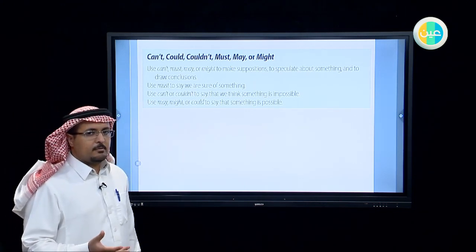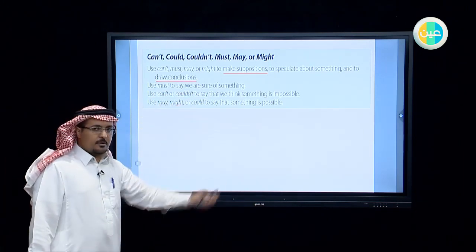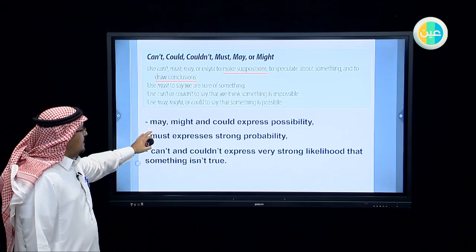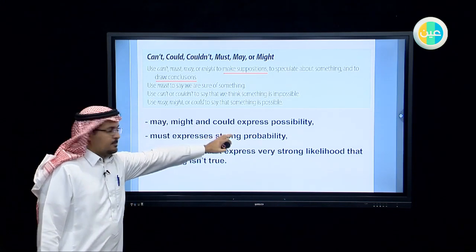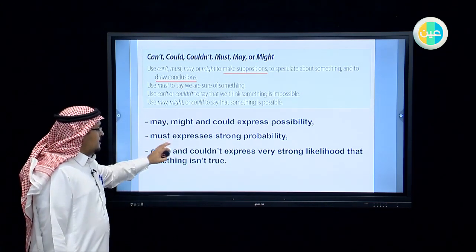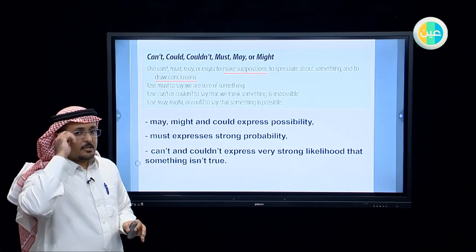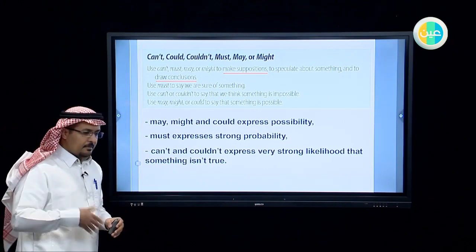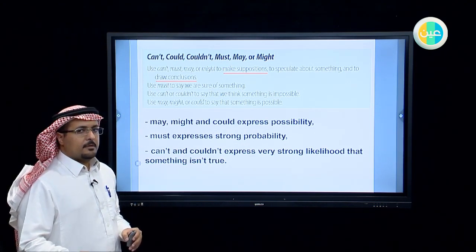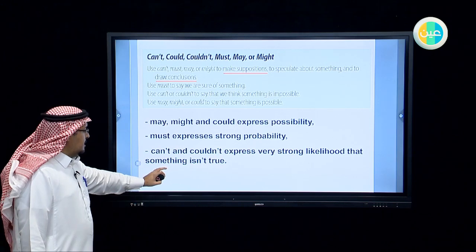We are going to make suppositions and draw conclusions. May, might, and could express possibilities — something that might happen; you are not sure but it's possible. Must expresses strong probability — it's also a possibility but a strong one. The data you have makes you sure of this probability.